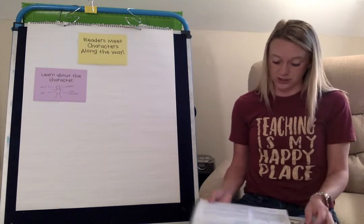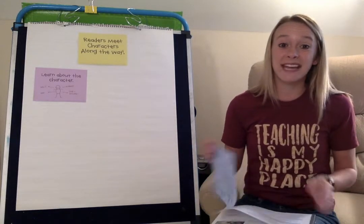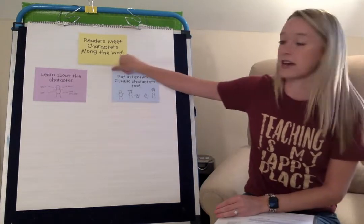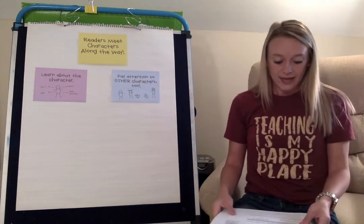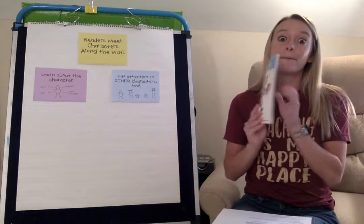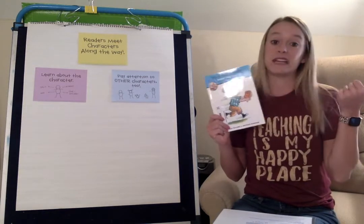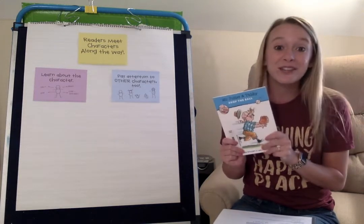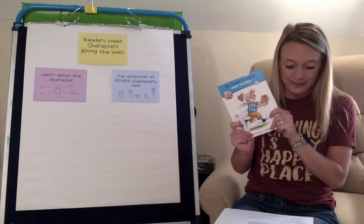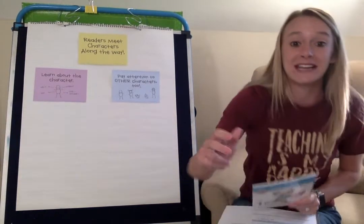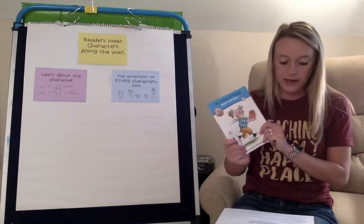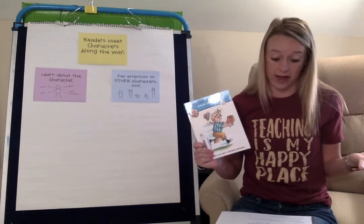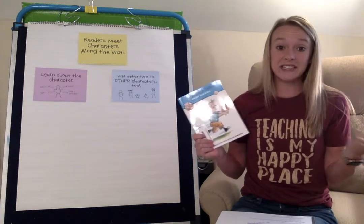When you learn about other characters, you end up knowing the main character even better. So today we're going to pay attention to other characters too. Yesterday we learned a bunch about Mr. Putter — that he loves to take naps, that he wants to play baseball, and he has a cat named Tabby. But if we want to know Mr. Putter even better, it will be important to learn about the other characters. Who else is in the story? Does Mr. Putter have friends? Family? Let's read to find out.